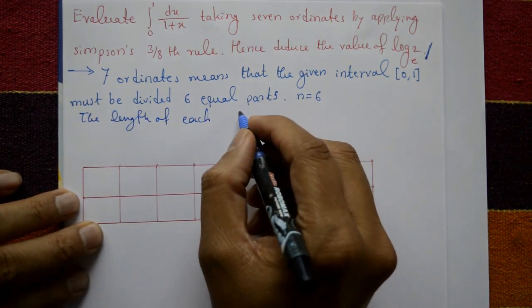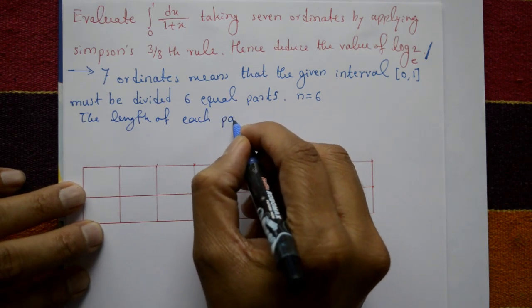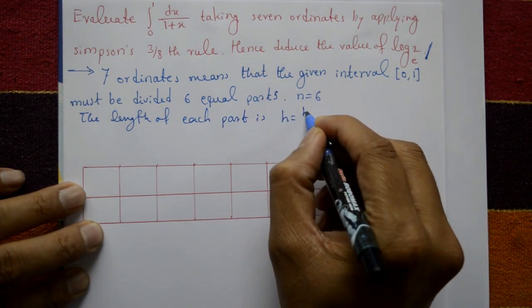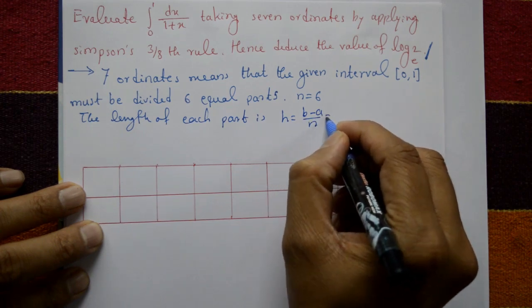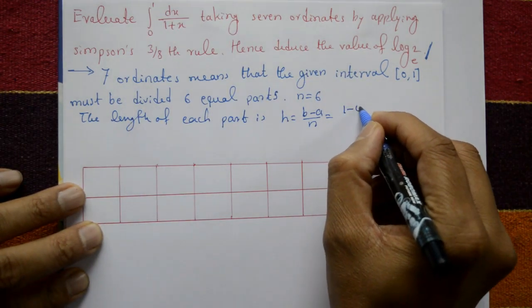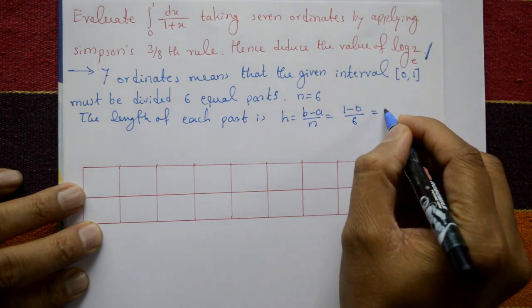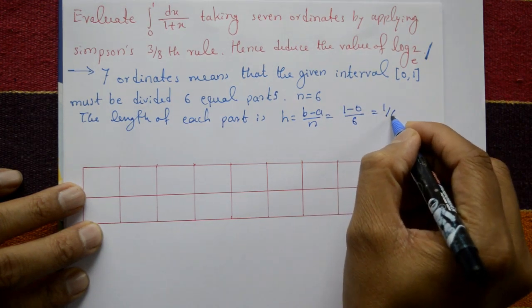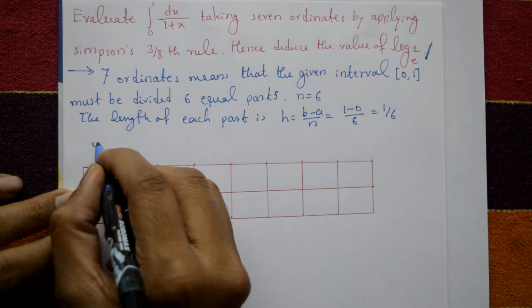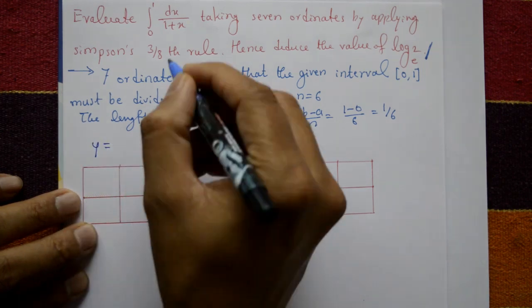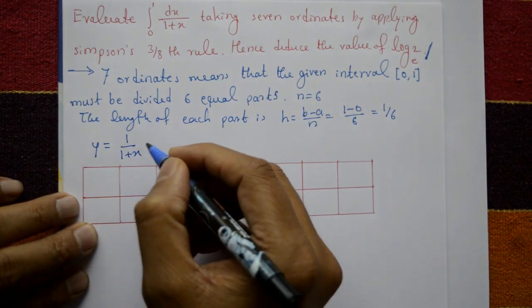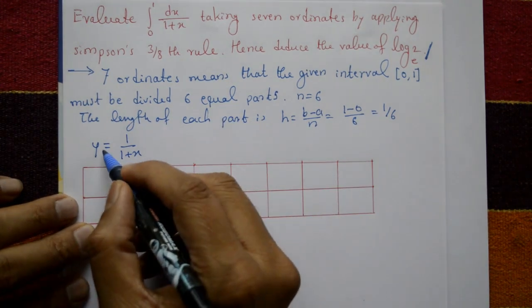The length of each part is h = (b - a) / n, which is (1 - 0) / 6, so h is equal to 1/6. Now y is given as y = 1 / (1 + x). We will find the y values for corresponding x values.